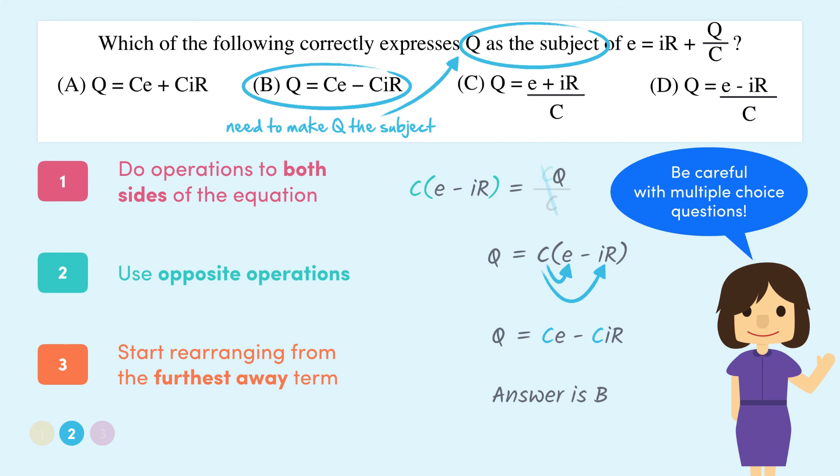Just remember to be careful with multiple choice questions because there are often answers called distractors which look like they could be the right answer. Once you've done the working out, you can see that even though they might be similar, they're not actually correct.